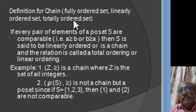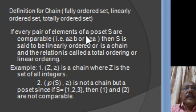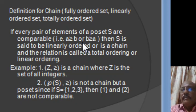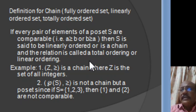Now let us define a chain. A chain is also known as a fully ordered set, a linearly ordered set, or a totally ordered set. If S is a poset and for any two elements A and B, either A ≤ B or B ≥ A, then S is said to be a linearly ordered set or a chain, and the relation is called a total ordering or a linear ordering.